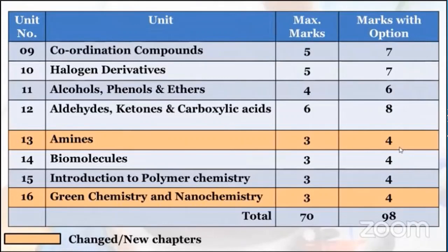Chapter 13: Amines — maximum marks 3, along with option 4. Chapter 14: Biomolecules — maximum marks 3, along with option 4. Chapter 15: Introduction to Polymer Chemistry — maximum marks 3, marks with option 4. Chapter 16: Green Chemistry and Nano Chemistry — maximum marks 3, marks with option 4. Total marks: 70. This paper is of 70 marks, and along with option it should be 98. Students have to attempt only 70 marks.